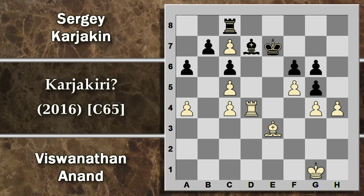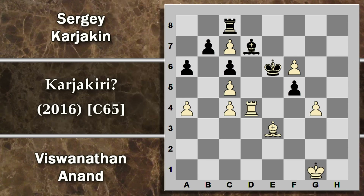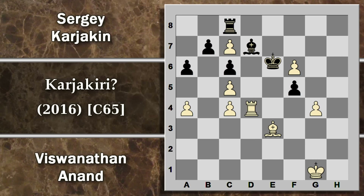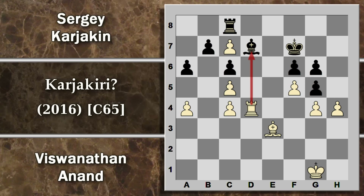Ora una scelta difficile: se viene giocata re E7 il bianco fa piazza pulita dei pedoni e il re nero è in guai perché è sovraccarico, deve difendere sia l'alfiere che l'avanzata del pedone. Se re E6 c'è torre D6 scacco, il re si deve allontanare, l'alfiere viene perso e il bianco perde un pezzo. Viene giocata quindi torre per C7: alla fine questo pedone viene preso, però il bianco ha un forte contro gioco sull'ala di re.